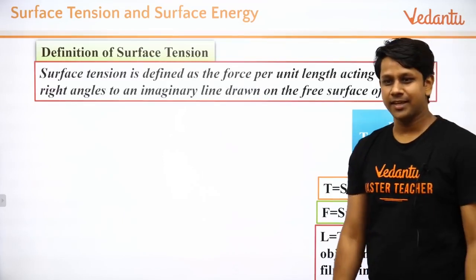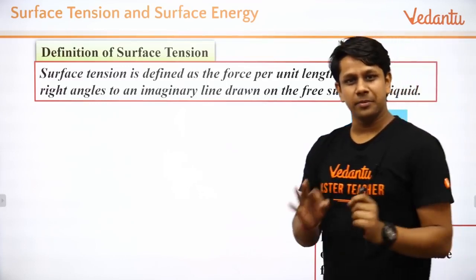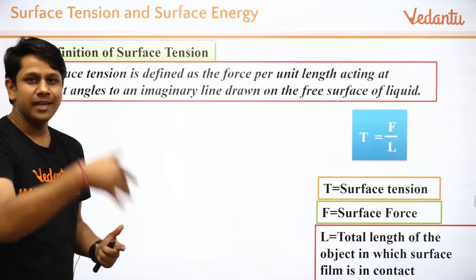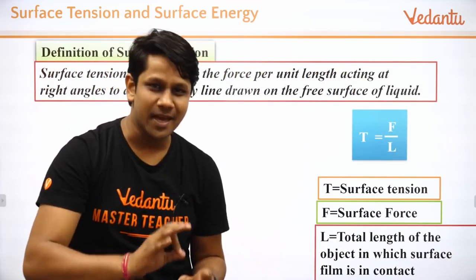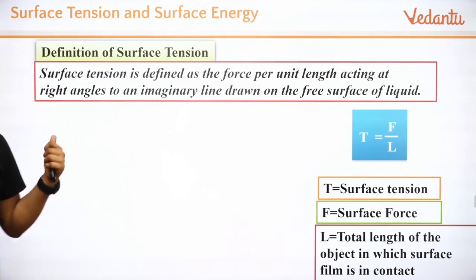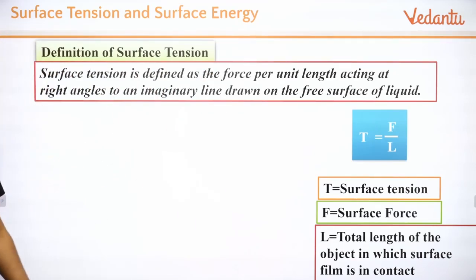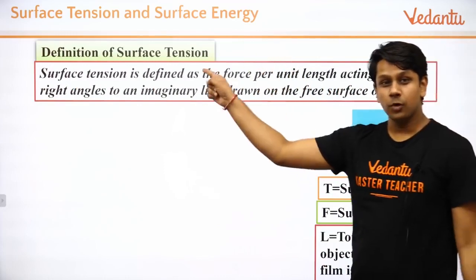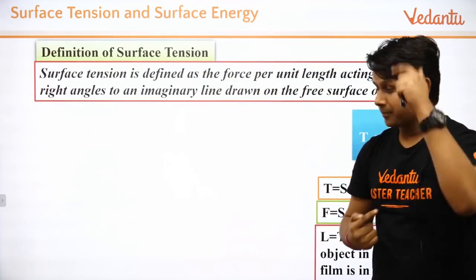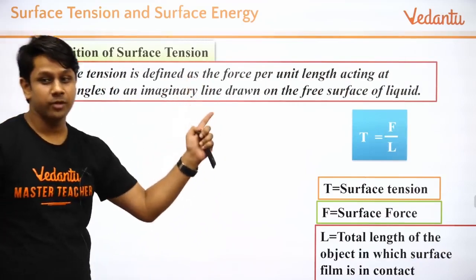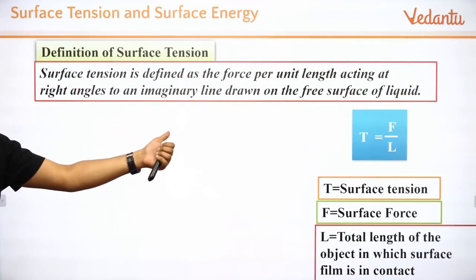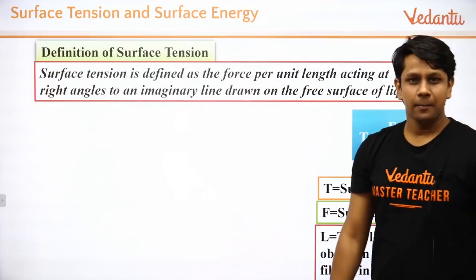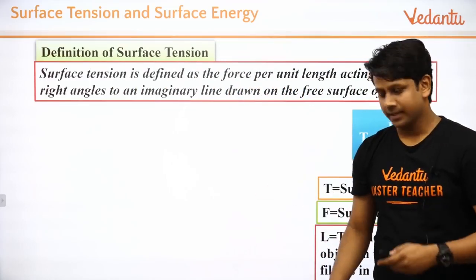Let's look at the definition of surface tension. Surface tension is defined as the force per unit length — note the unit carefully: Newton per meter. So: force per unit length acting at right angles to an imaginary line drawn on the free surface of a liquid. The definition makes more sense once I explain it.